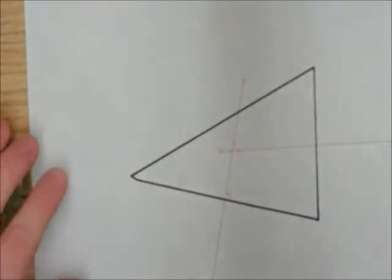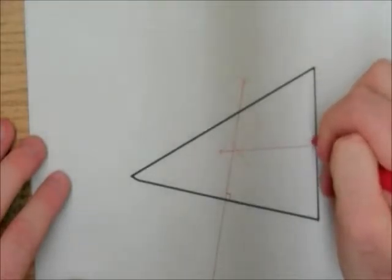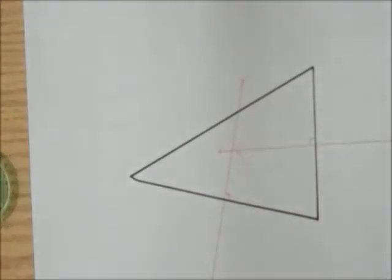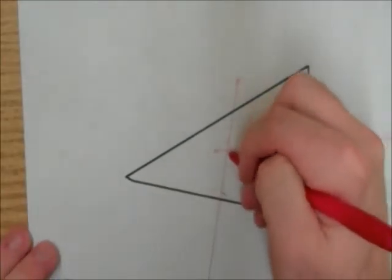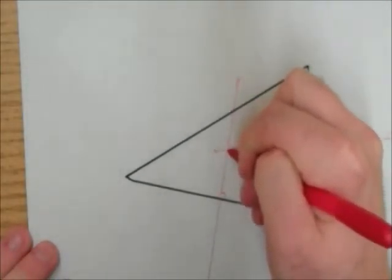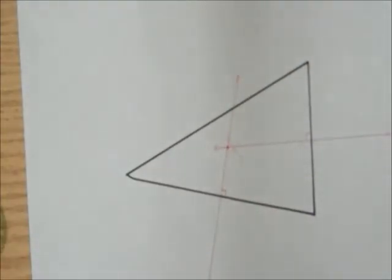Okay, so there's my two perpendicular bisectors. Looks like I missed a little bit right here, but that's okay. We used crude instruments, so things aren't going to be perfect. But what we now know is that this should be my circumcenter.